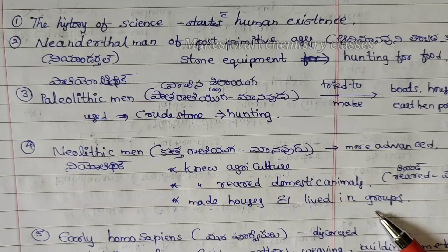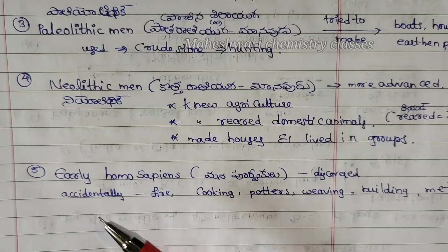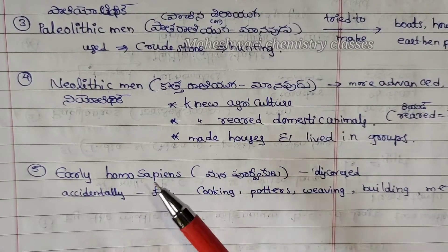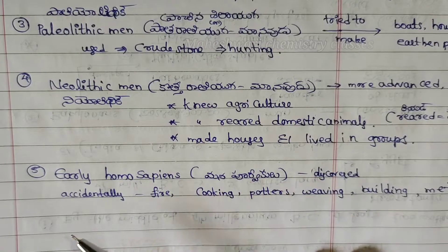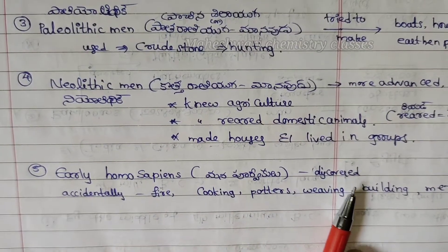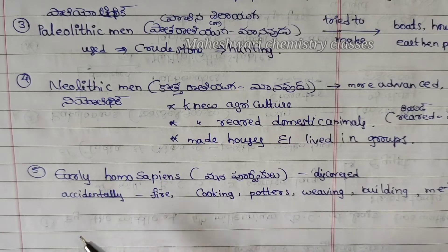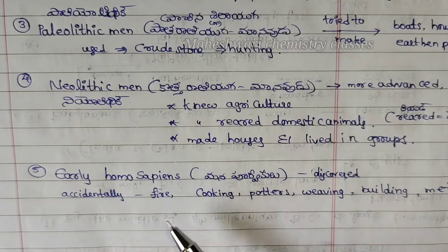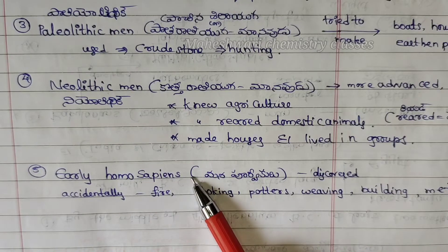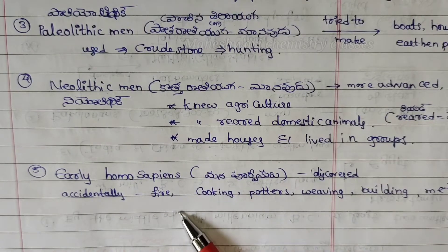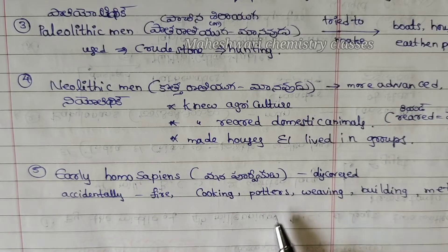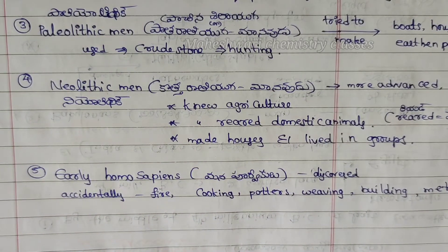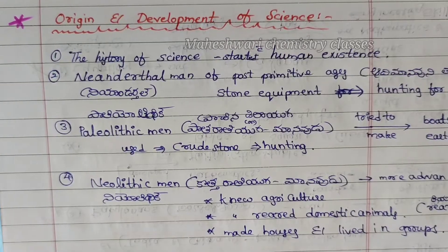This is the famous Homo Sapiens. We have discovered that Homo Sapiens is a human. Everyone is Homo Sapiens. They were able to make and use fire. This is the introduction part. Next, let's try the early science period.